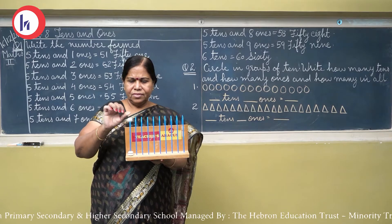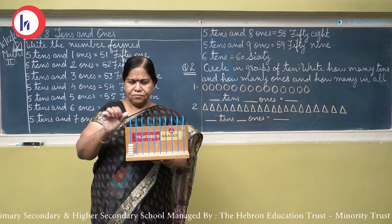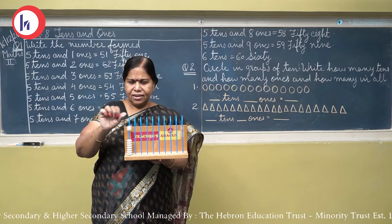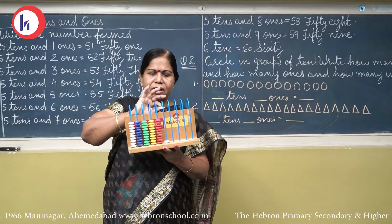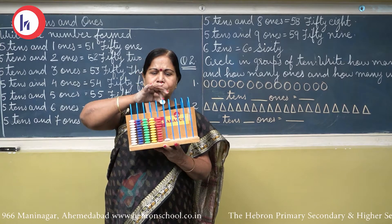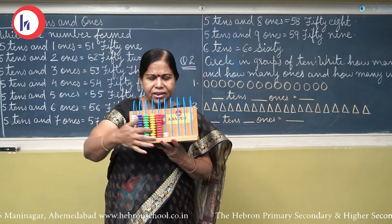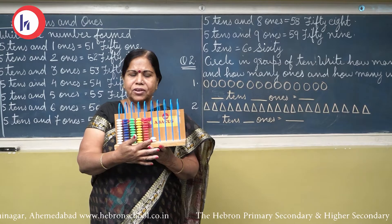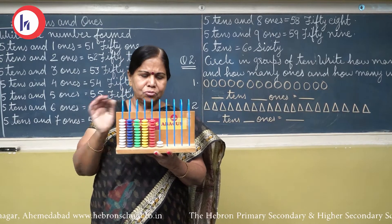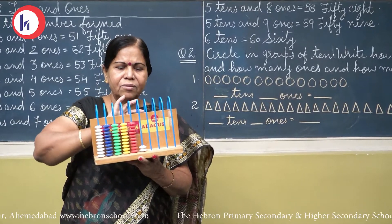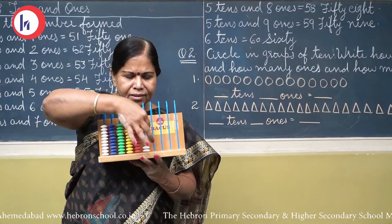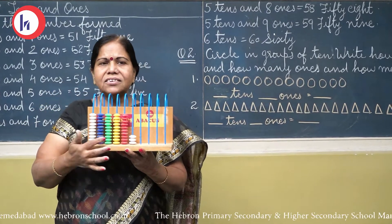Now children, what is this? Yes, it is called Abhaykas. What do we call it? Abhaykas. Now let us count: 1, 2, 3, 4, 5, 6, 7, 8, 9 and 10.